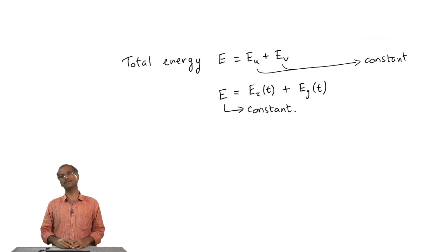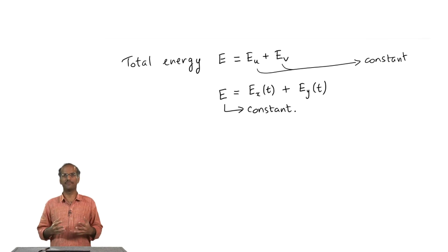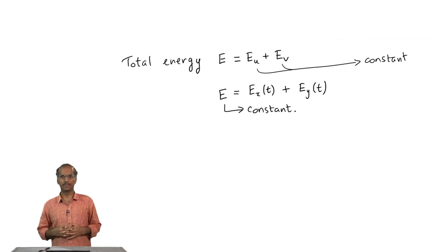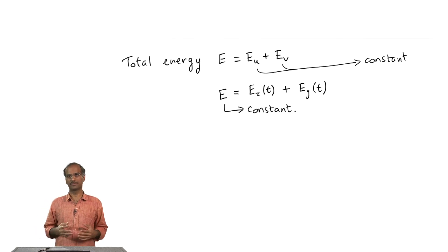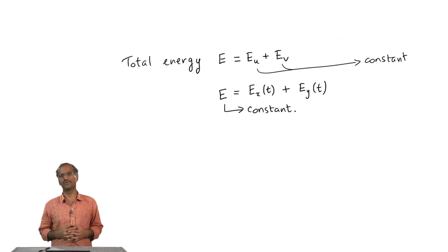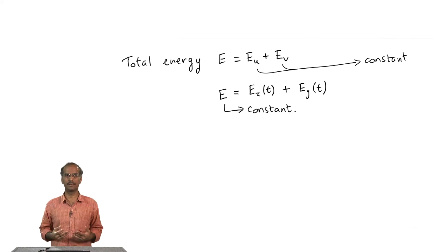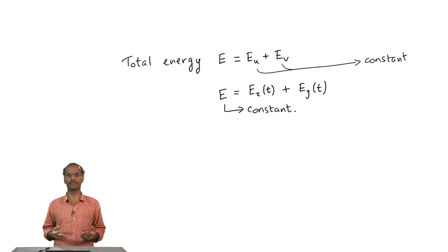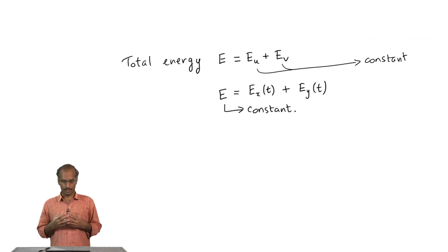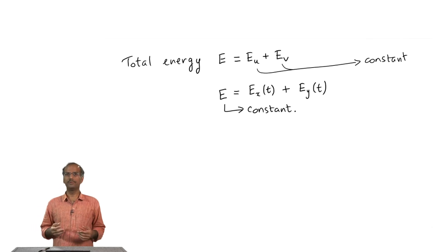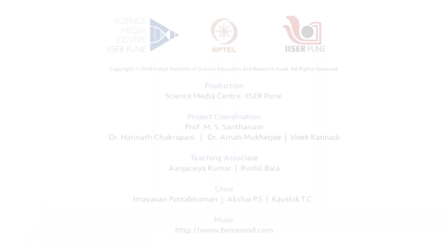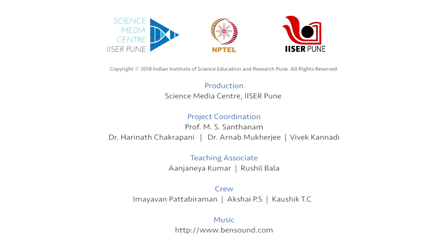Our method of analysis depended on being able to see that by adding and subtracting the two equations of motion we could transform coupled equations into two uncoupled equations — that was the trick we employed. It is not clear that for more complicated coupled systems this trick would always work. We need to find a general way of dealing with such coupled systems, and this is what we will do in the next module. Thank you.